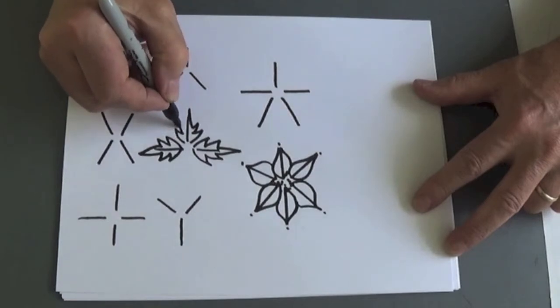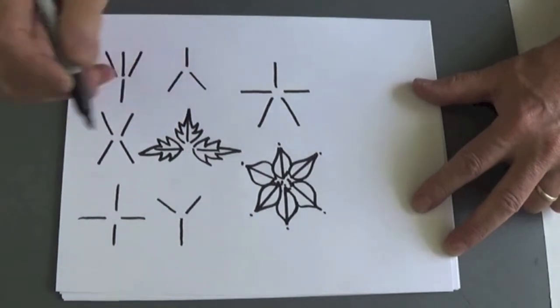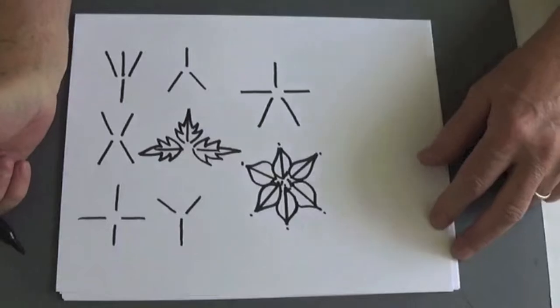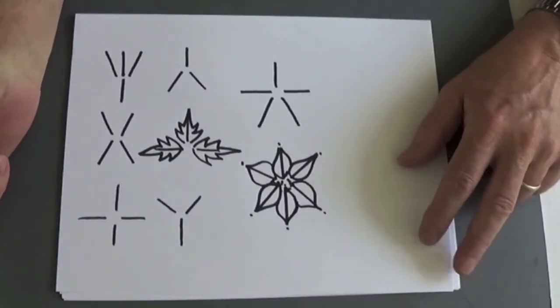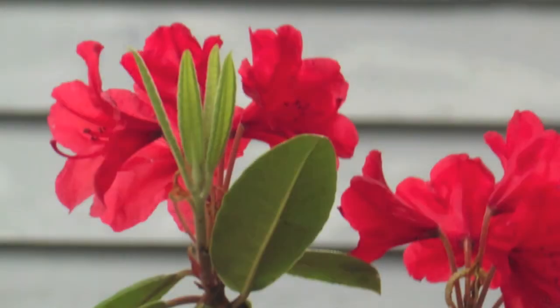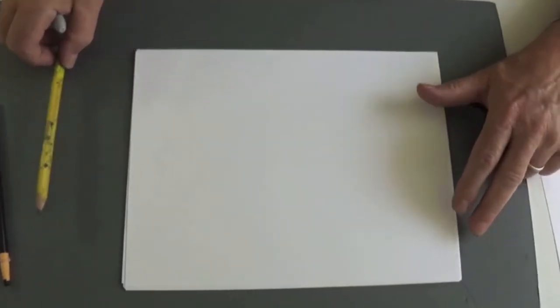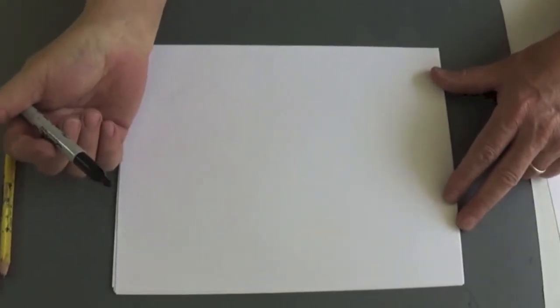Now how do I get these even? I go zigzag, zigzag, zig, zag, zig, zag, zig, zag. So I've got the same on each side. Usually, almost probably always, leaves are symmetrical.